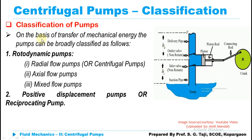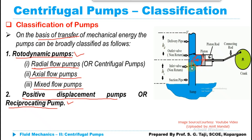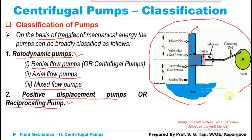On the basis of transfer of mechanical energy, pumps can be broadly classified as rotodynamic pumps and positive displacement or reciprocating pumps. The centrifugal pump is a type of rotodynamic pump, also called a radial flow pump. Other rotodynamic types include axial flow and mixed flow pumps. In a reciprocating pump, a piston rod operates non-return valves — when suction develops the inlet valve opens, and when the piston moves forward the outlet valve opens pushing water upward. A hand pump is the best example of a reciprocating pump.